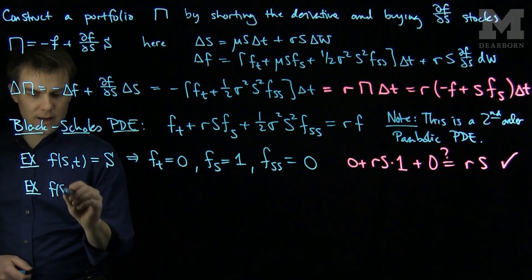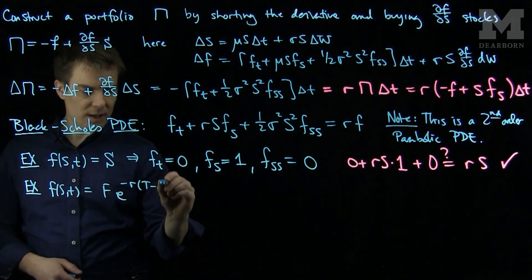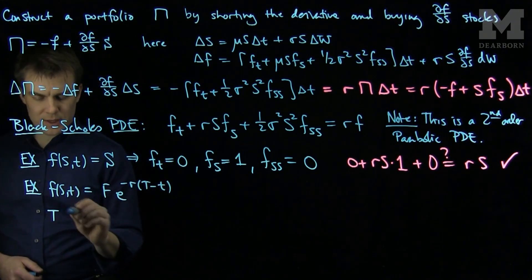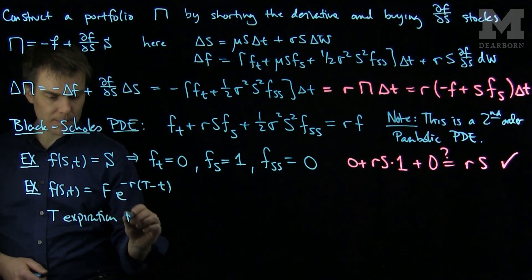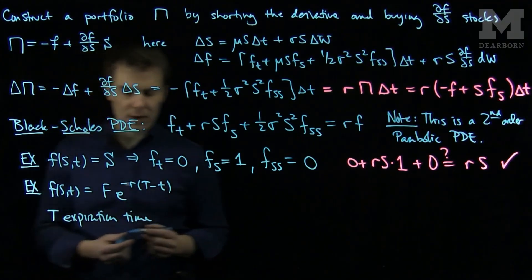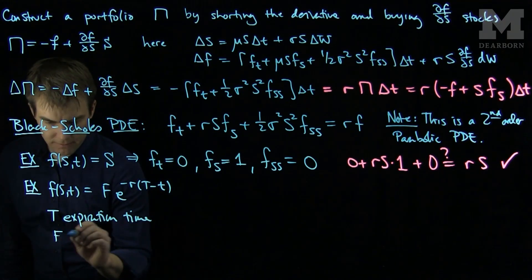f(s,t) which is F e^(-r(T-t)) where T is the expiration time, and that's going to be a fixed time. So we can compute the derivative of this, and F is going to be, we'll call F the face value.